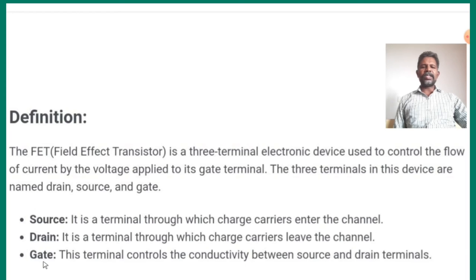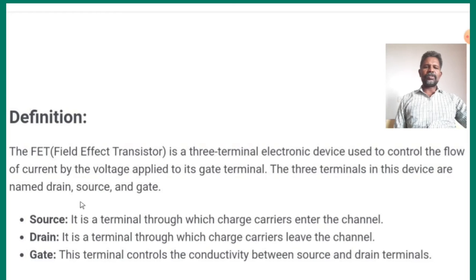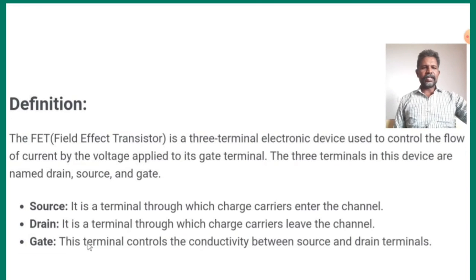Next, gate. Gate means what is control? The gate is the terminal that controls the conductivity between source and drain. So the three terminals — source, drain, and gate — are very important.